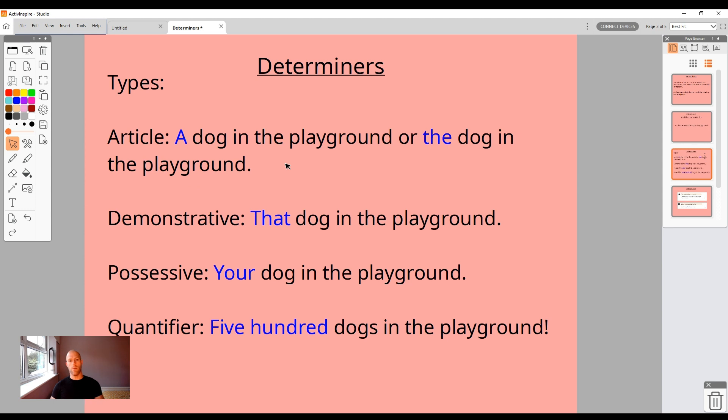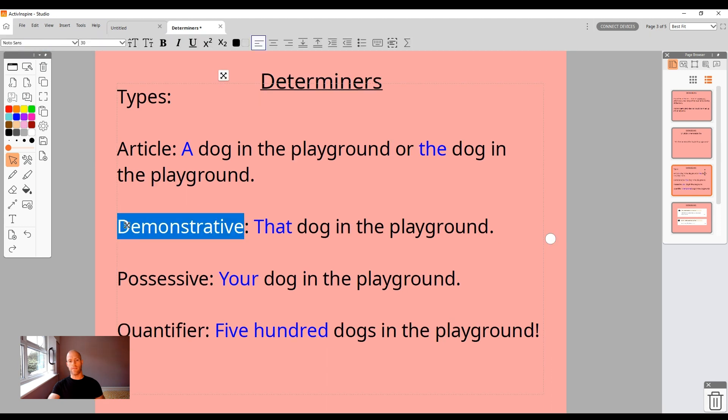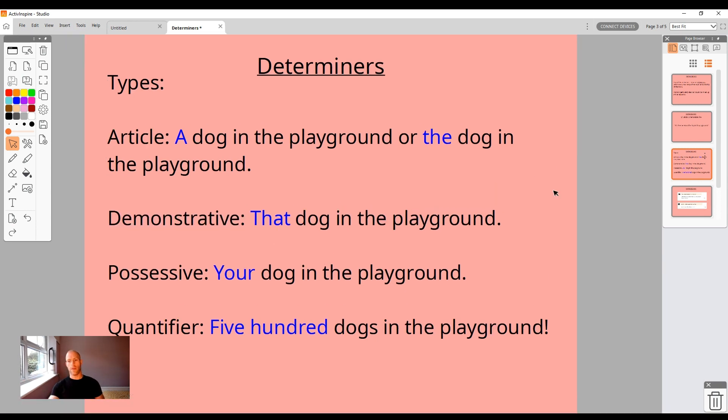Demonstrative is another type of determiner. Again, you don't need to know these subheadings. That dog is in the playground. This dog is in the playground. It's almost like you're demonstrating which dog you're talking about. That dog is in the playground - hugely exciting. We're demonstrating now which dog we are talking about.